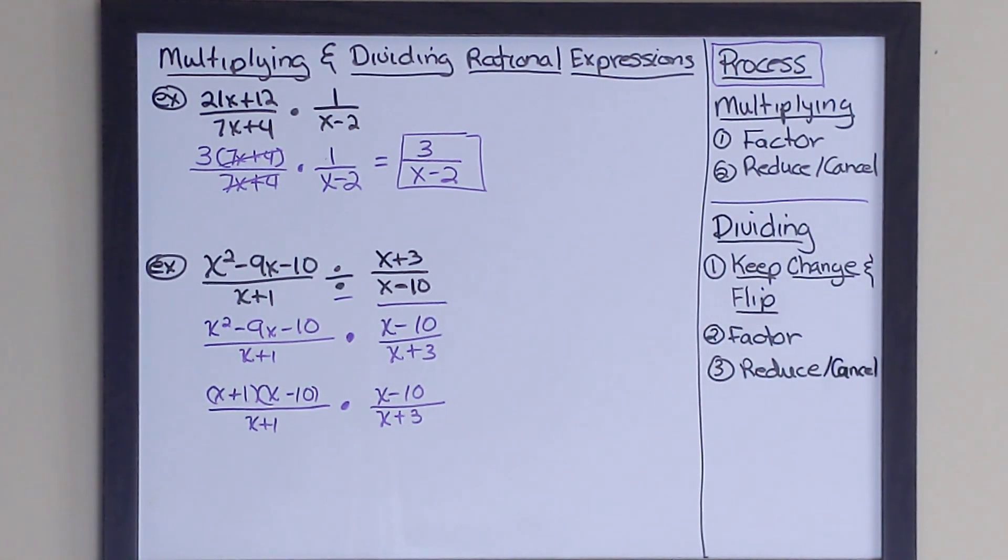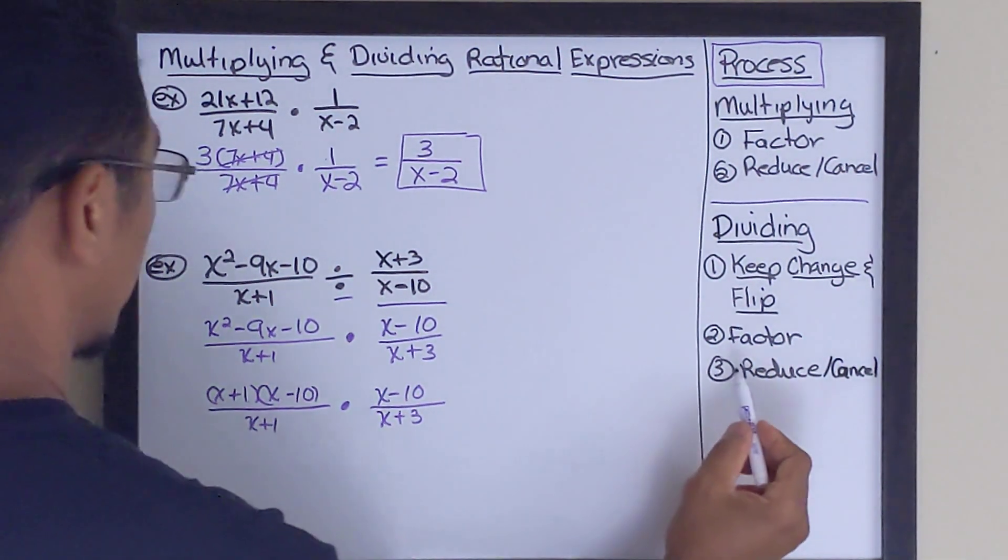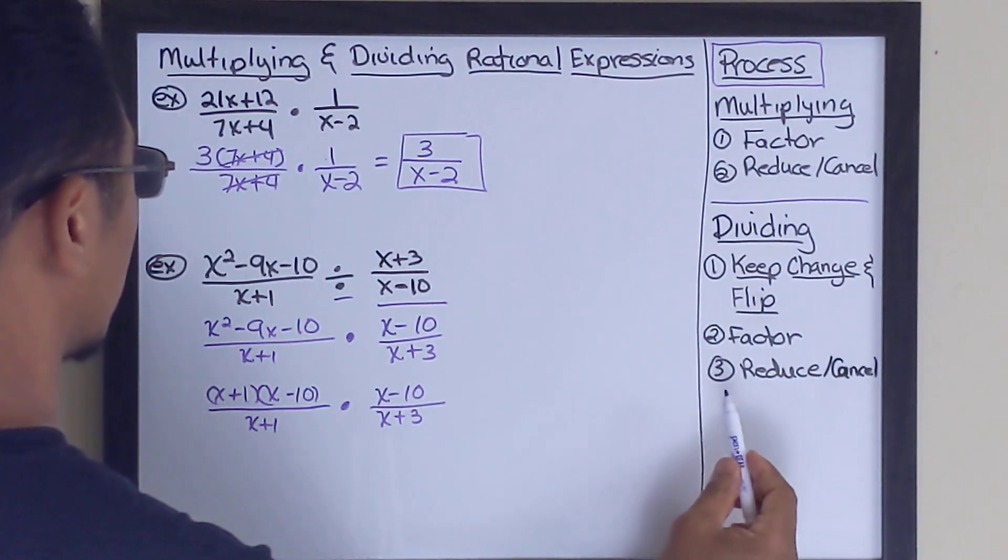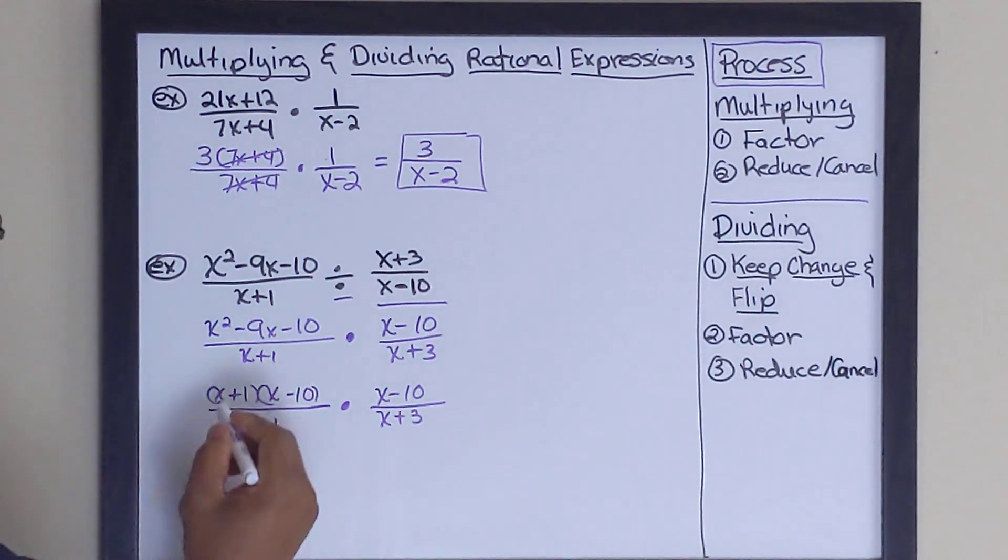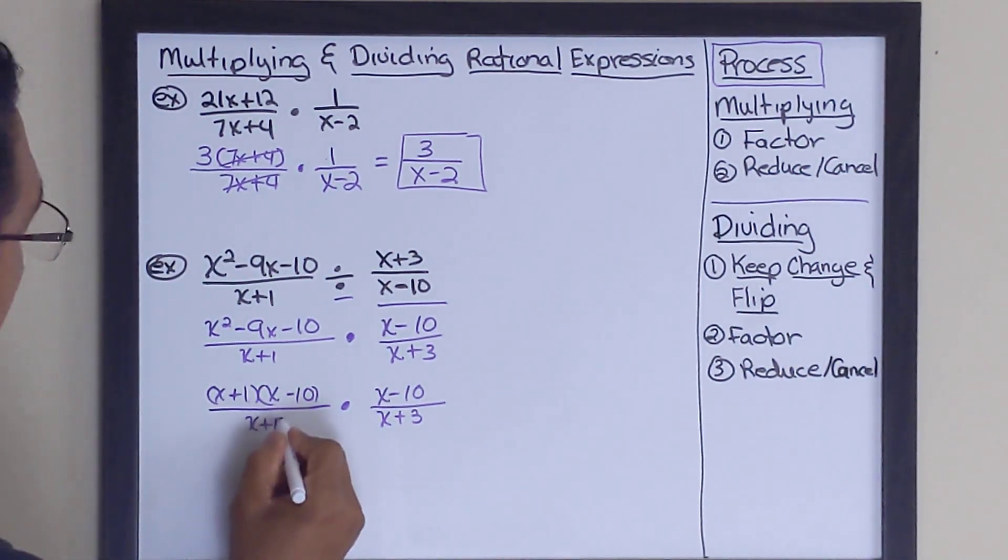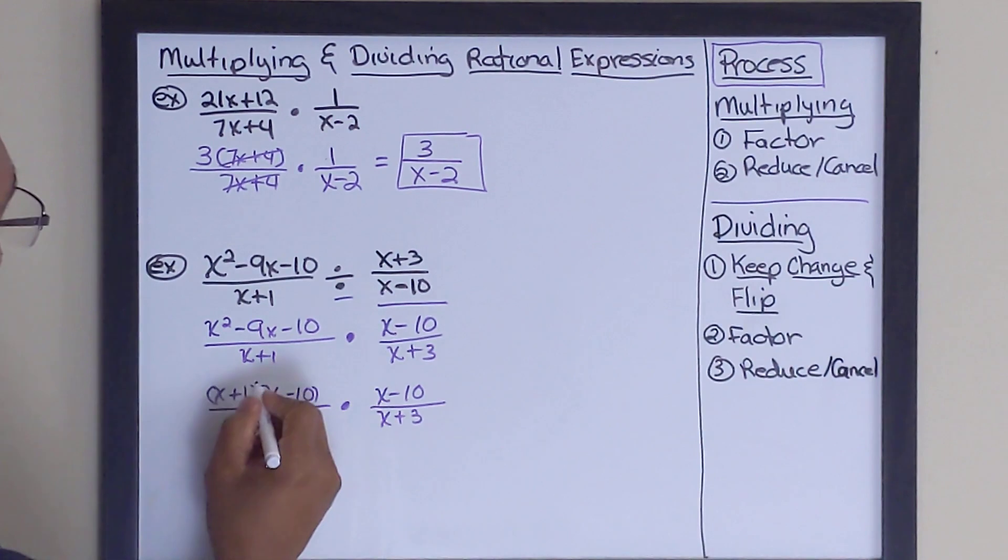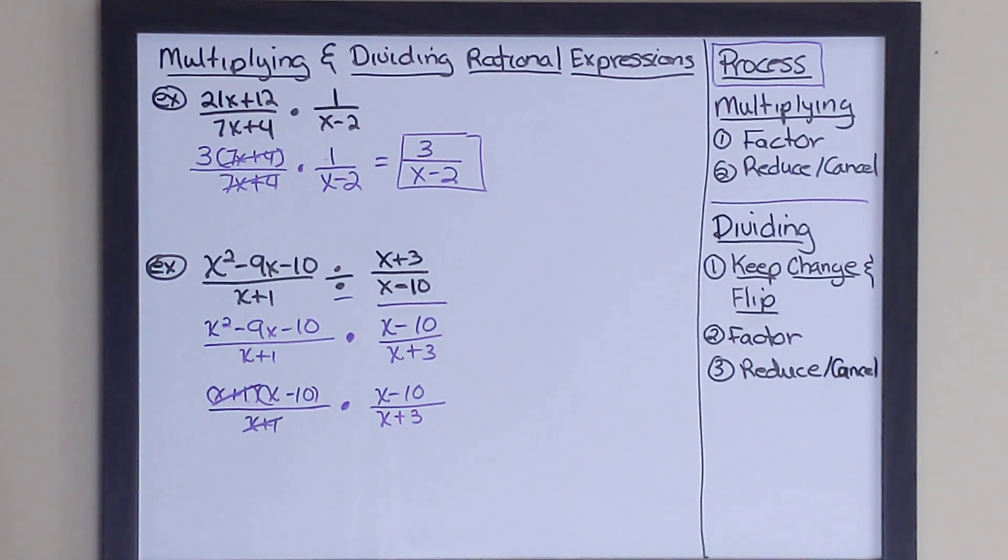Now that we have that, we're going to basically do what we can, basically what we're going to do is we're going to reduce and cancel whatever we can. And if we look at the numerator and denominator, we've got an x plus 1 and an x plus 1 we can cancel.